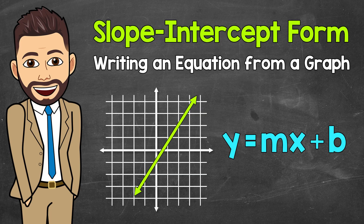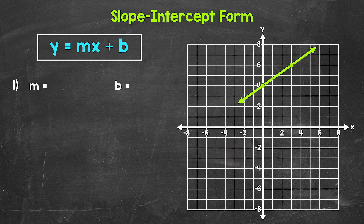Welcome to Math with Mr. J. In this video, I'm going to cover how to write an equation in slope-intercept form from a graph. And remember, for slope-intercept form, we have y equals mx plus b, with m being the slope and b being the y-intercept. And then x and y are the x and y coordinates of any point on the line.